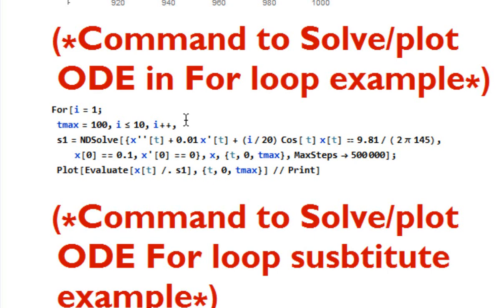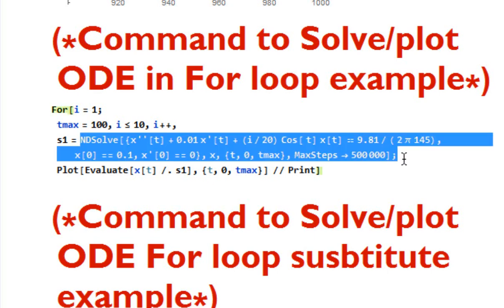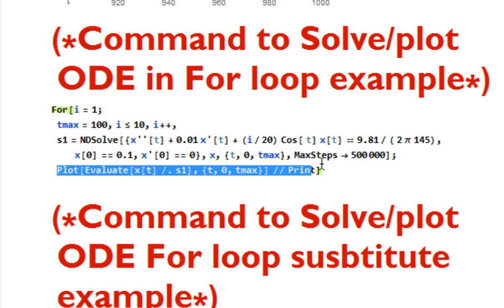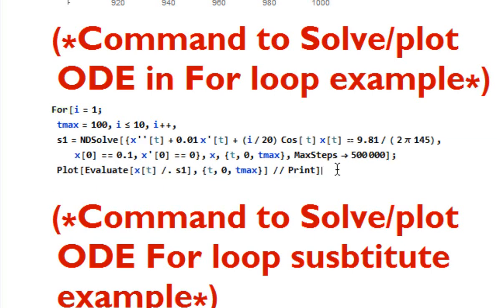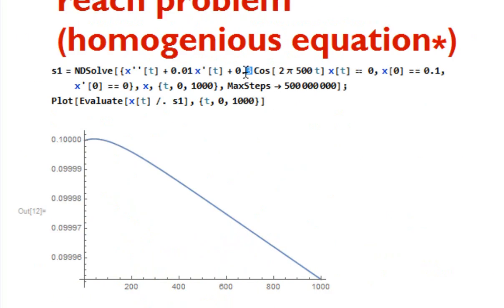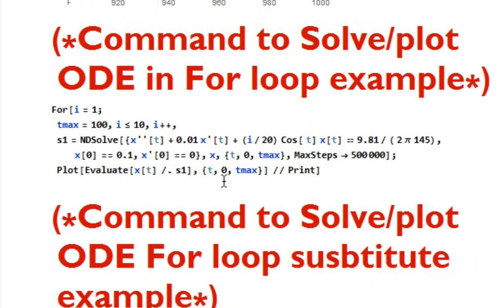Now I'll tell you the best way to solve and plot any differential equation. Many times you want to vary a parameter and see its effect. Suppose the pre-multiplier of cos(t) is kept at 0.3 and you want to vary it from 0.1 to 0.9, seeing the ODE output for each value. You can use a for loop to achieve this, which I have demonstrated in a previous tutorial.